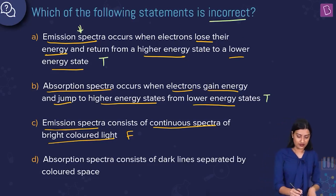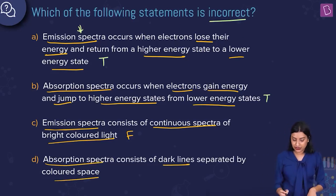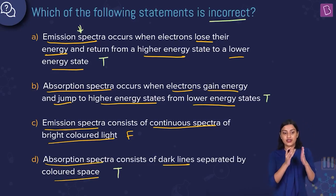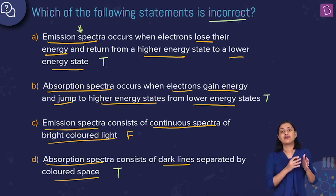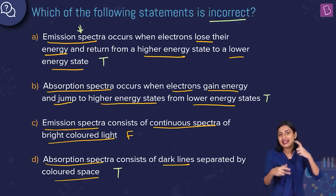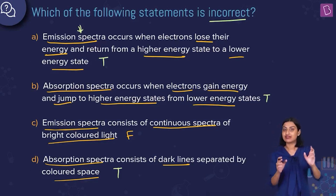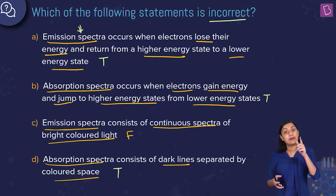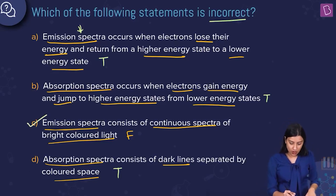Option D says absorption spectra consist of dark lines separated by colored space. Yes, this statement is true. With an absorption spectrum, your entire photographic plate has color because only very few wavelengths are missing — you have more of a band spectrum with certain dark lines. It is basically the negative of an emission spectrum: absorption spectrum shows dark lines on a bright background, emission spectrum shows bright lines on a dark background.